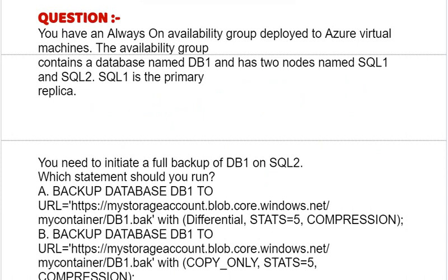Our question is: you have an always-on availability group deployed to Azure Virtual Machines. The availability group contains a database named DB1 and has two nodes named SQL1 and SQL2. SQL1 is the primary replica. You need to initiate a full backup of DB1 on SQL2. Which statement should you run?